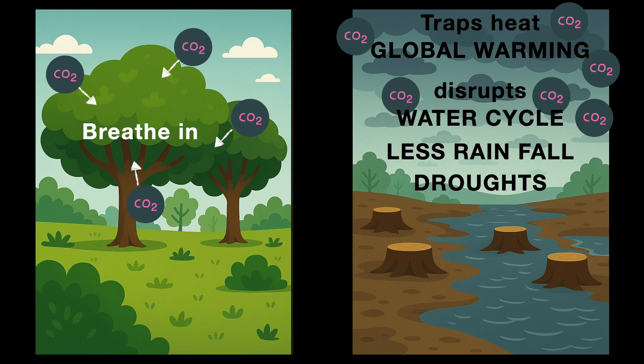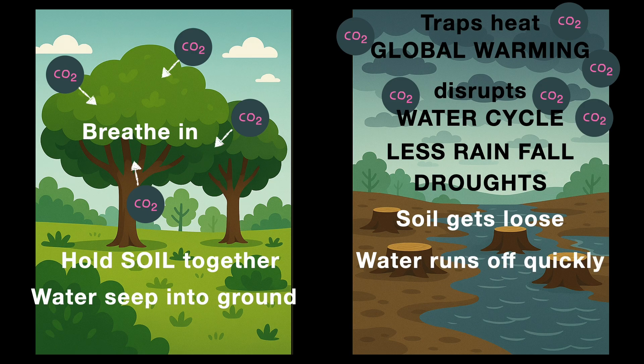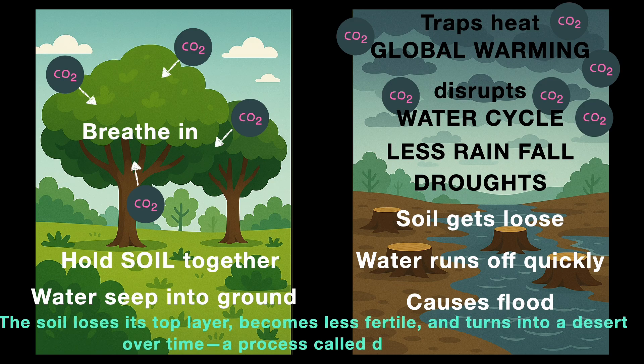Now, how does more flooding happen? Trees hold soil together and help water seep into the ground. When we cut them, soil gets loose and water runs off quickly, causing floods. Also, without trees, soil loses its top layer, becomes less fertile, and turns into a desert over time.